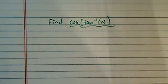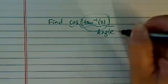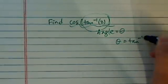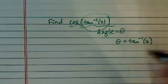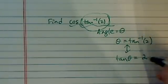To find this in an exact formula, we need to realize this is an angle. Let's call it theta. Basically, theta equals tan^(-1)(2), and translating this, it's really saying tan(theta) equals 2.